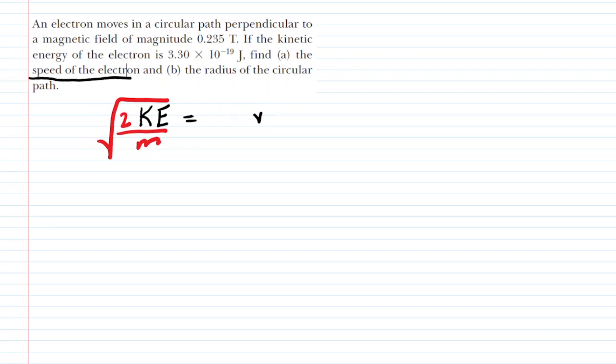All we need are two pieces of information. We have the kinetic energy of the electron given to us in the standard unit of joules. We're going to plug it in for kinetic energy and the mass we will look up in a reference table.